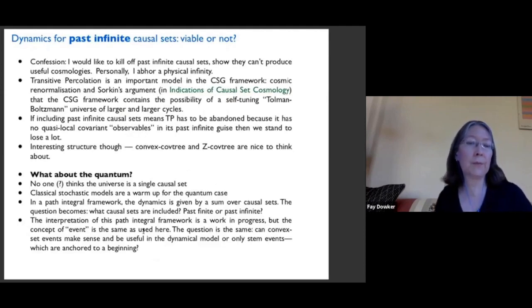And then finally, what about the quantum? So no one, I think, considers it likely that the universe is a single causal set. And everything that I've said so far has been completely classical. I've been speaking as if the universe is a single causal set. And classical stochastic models, such as classical sequential growth models and these models of growing past infinite causal sets, they're just warm-ups for the quantum case. And as I said, one of the ingredients for causal set theory as an approach to the problem of quantum gravity is a path integral. So the path integral is the basic framework for a quantum dynamics for causal sets.